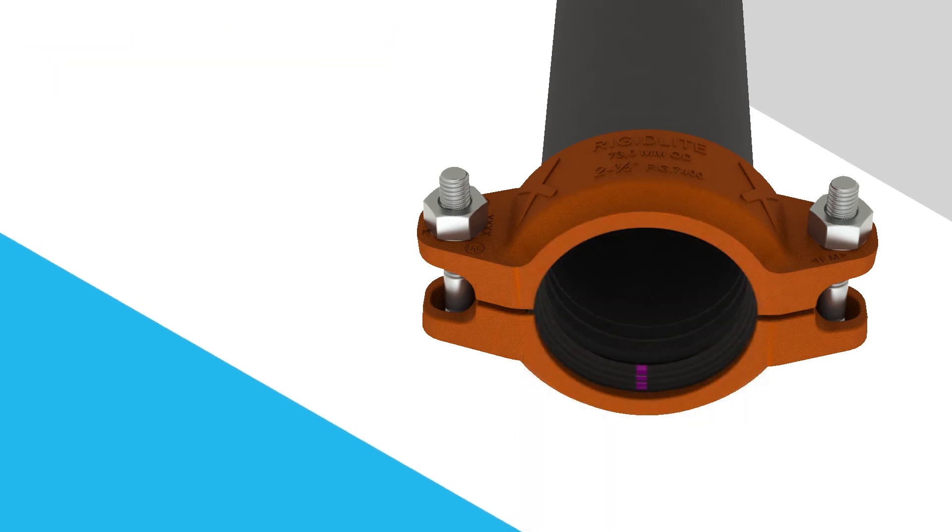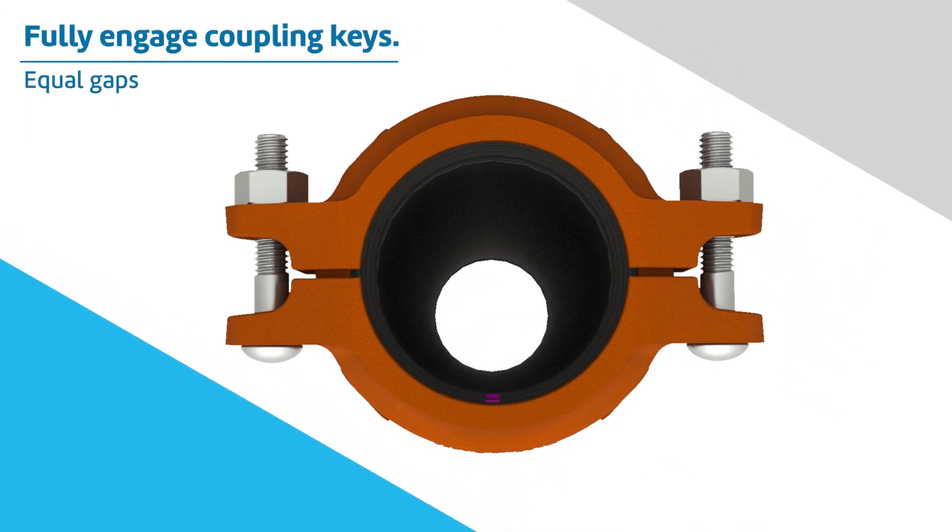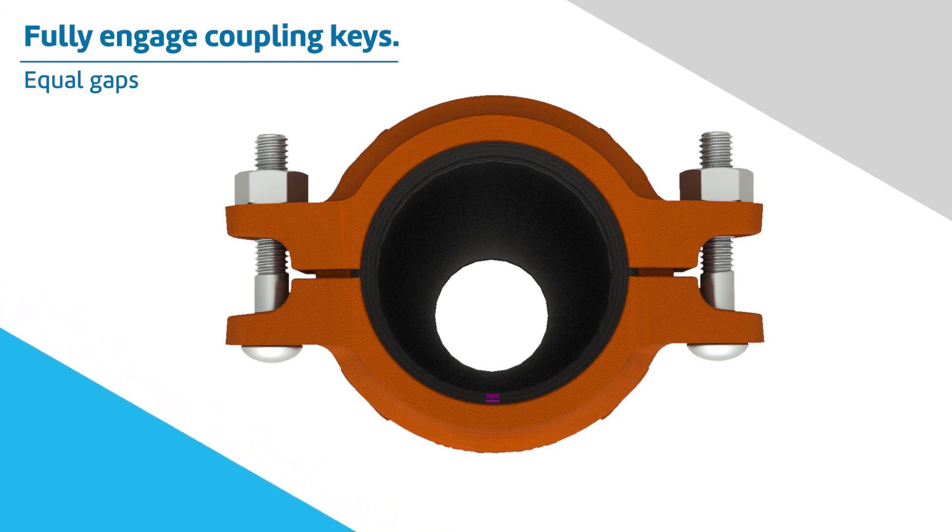Visually inspect the pipe joint to assure the coupling keys are fully engaged in the pipe grooves. The bolt pads are to have equal gaps on each side of the coupling.